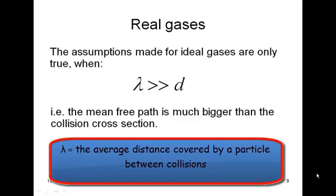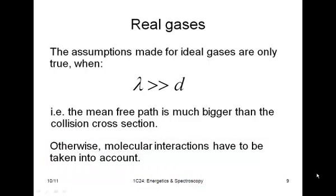So if you think about it, what that really means is if the mean free path is really big and the collision cross-section is really small, then the molecules don't have much of a chance of bumping into each other because they don't see each other. If this isn't the case, then the molecular interactions have to be taken into account.